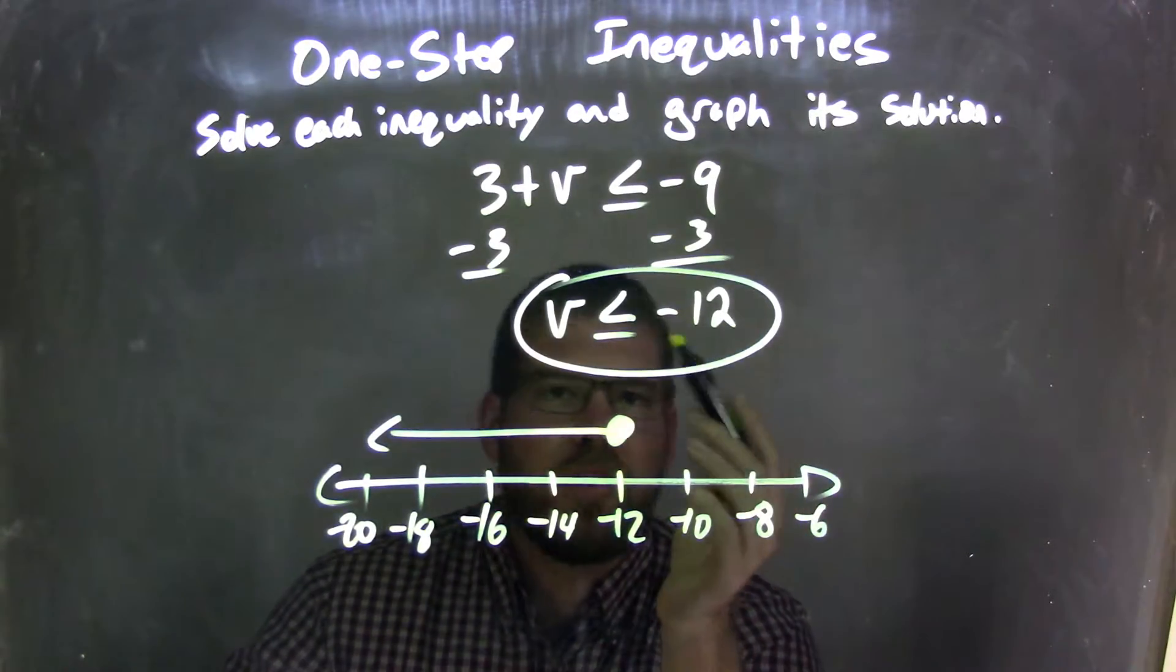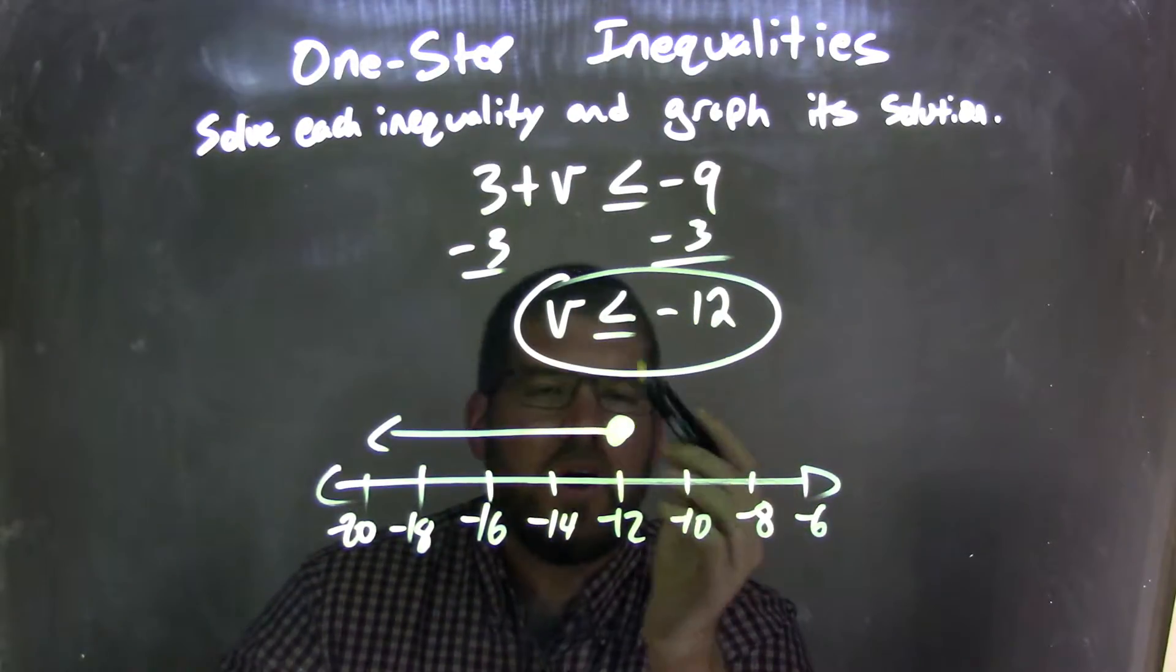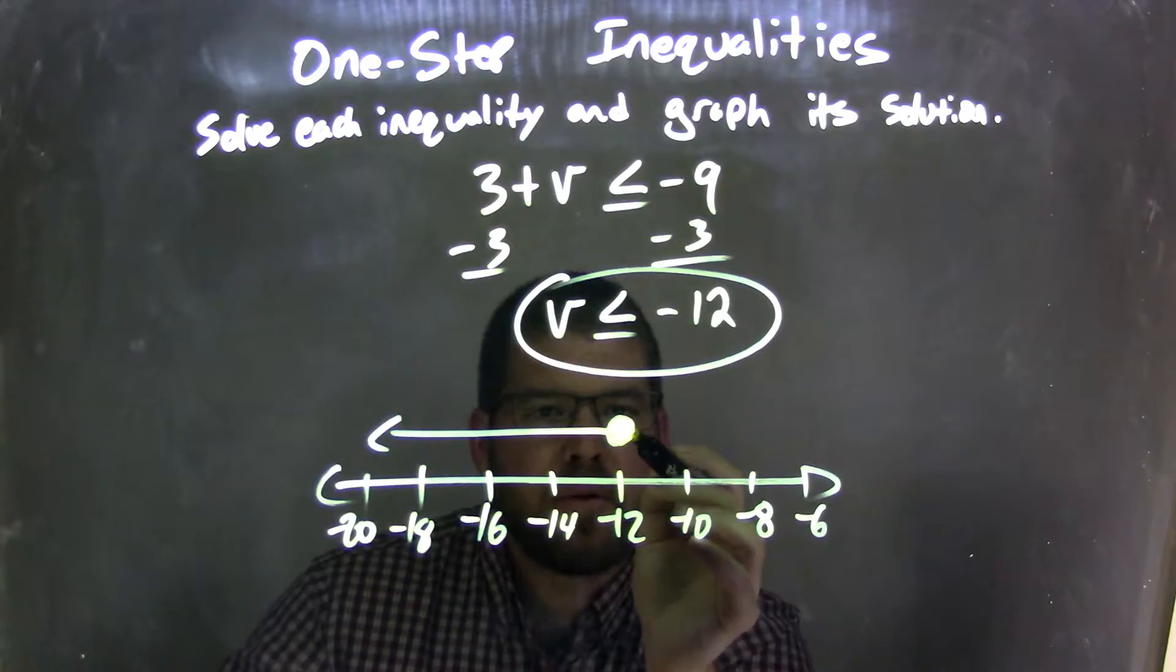From there, that's our final inequality. I have to graph it with a closed circle at negative 12 because of the equal sign. So closed circle right there. A closed circle.